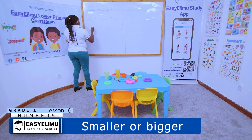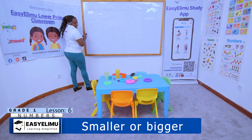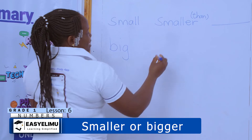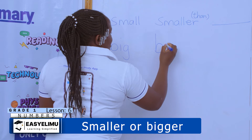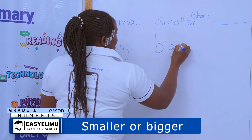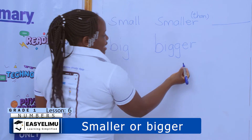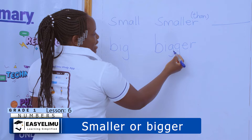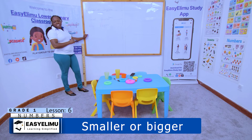So we are talking about 'big.' The green tumbler is big, but the yellow tumbler is bigger. Remember, 'bigger' is written with double G — don't write it with a single G. Are we together?